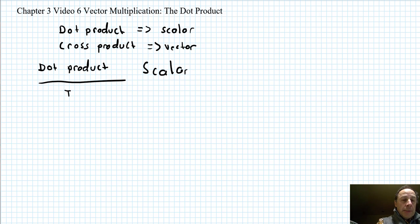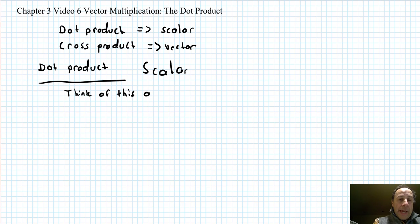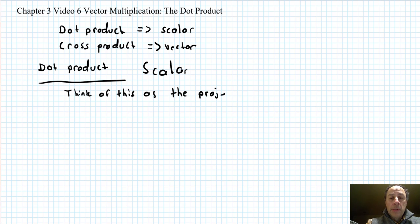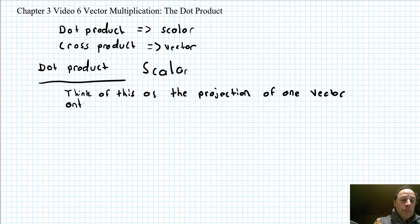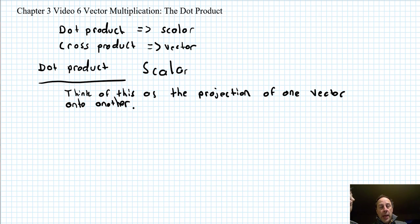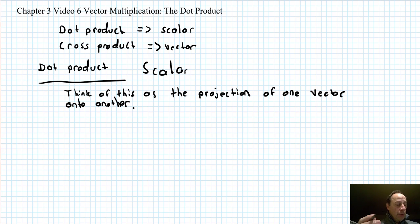Think of this multiplication as the projection of one vector onto another. Remember earlier when I showed you a vector and we broke it into components — I said pretend there's a light shining down and it's casting a shadow. That's basically what the dot product is doing when you dot two vectors.